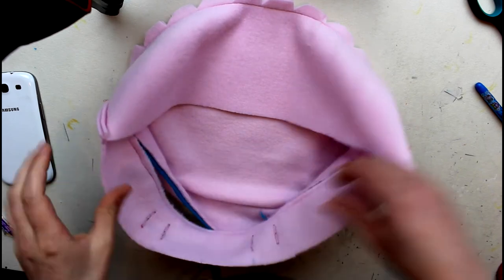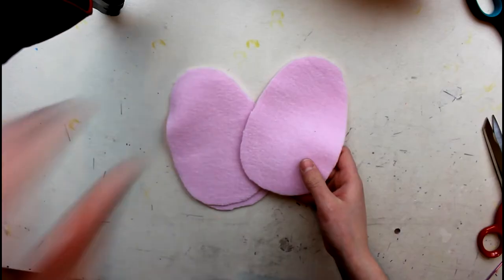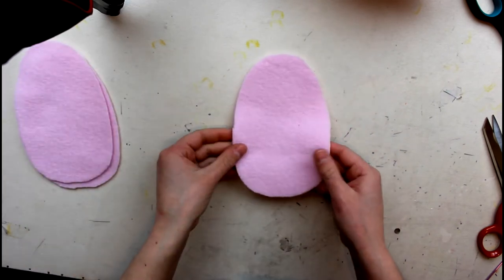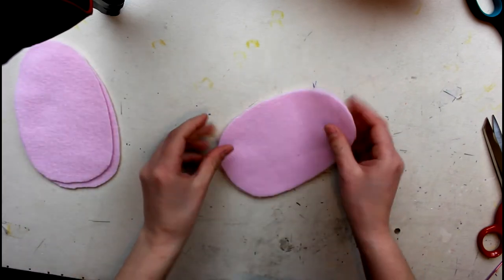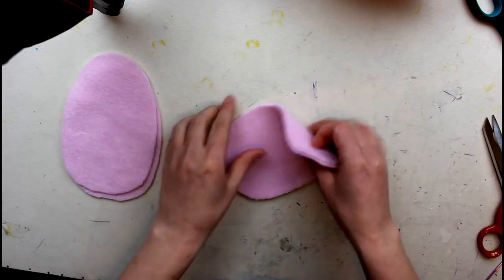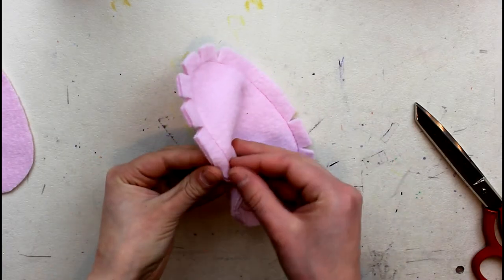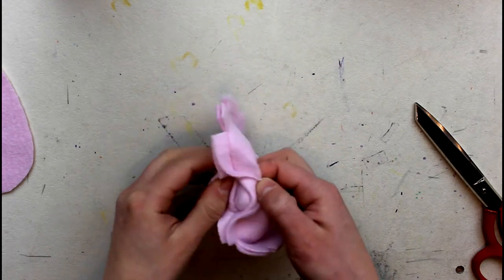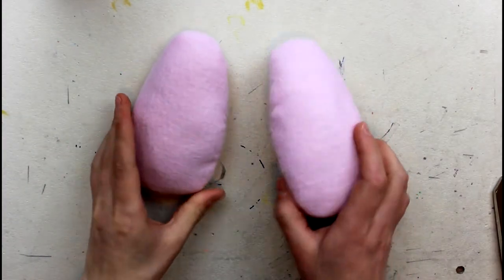Now we're going to make the paws. You should have four paw pieces. Take two at a time, put them right sides together, and sew all around but make sure you're leaving a gap for turning everything inside. Once sewn, clip your seam allowance in the curved area, then stuff them and close the opening shut.